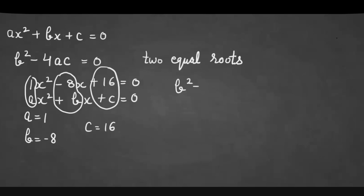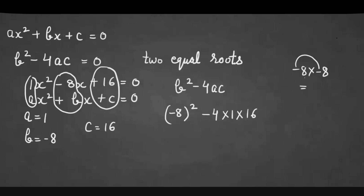Now we calculate the value of b² - 4ac. Substituting the values: (-8)² - 4(1)(16). (-8)² means -8 × -8, which equals 64. So we get 64 - 4 × 1 × 16 = 64 - 64 = 0. Since b² - 4ac = 0, this equation has two equal roots.